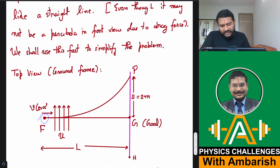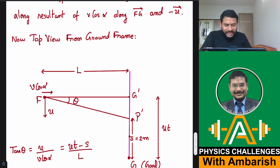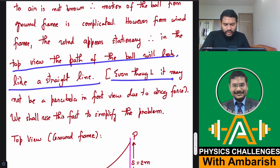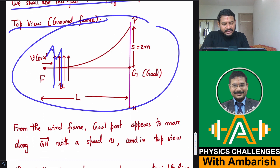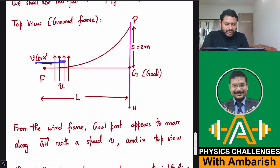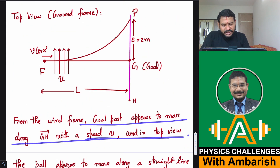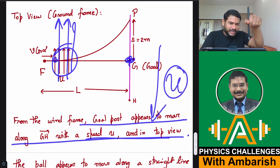In the top view: let F be the initial point of the football and G be the goal post. Without wind the ball would have gone straight from F to G, but because of wind it deviates. From the wind frame, you subtract the wind velocity from the ball's velocity. The horizontal velocity is v·cos α initially. From the wind frame, the goal post appears to move along GH with speed u — since wind blows in one direction, the goal post appears to move backward at speed u, shifting by a distance u·t in time t.